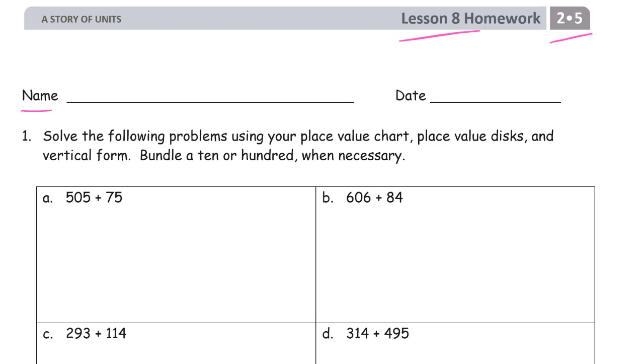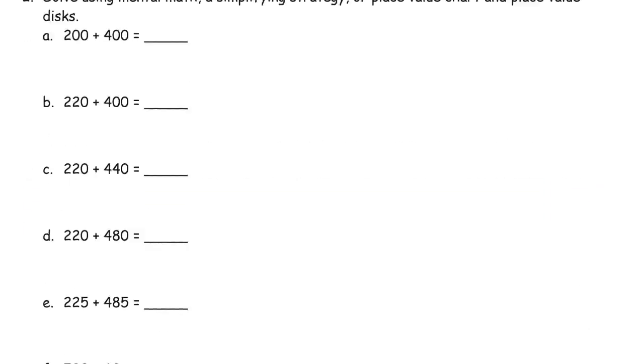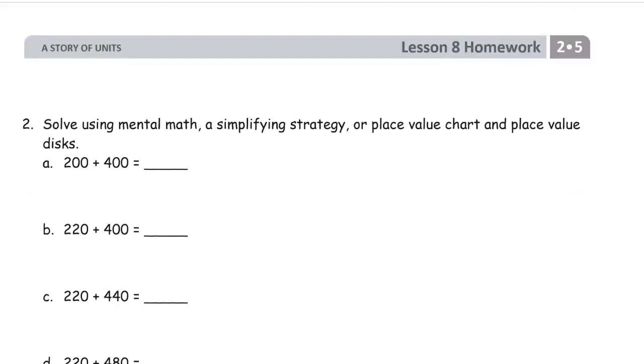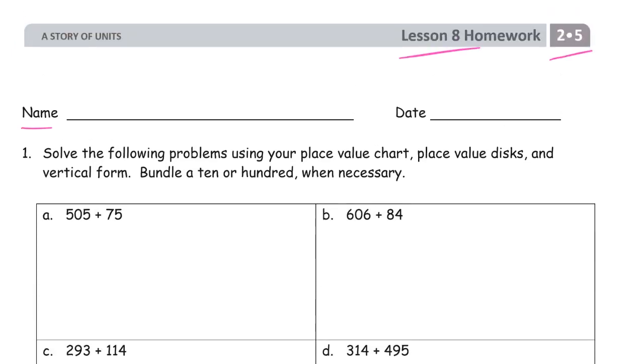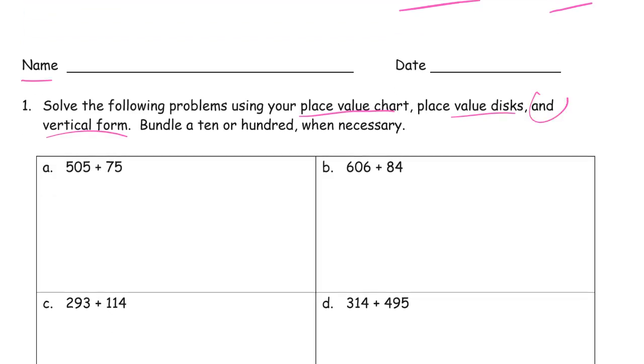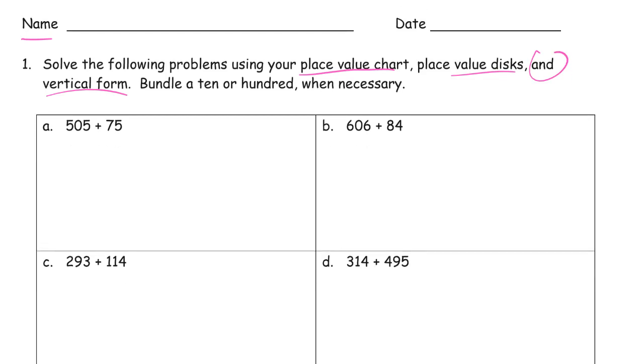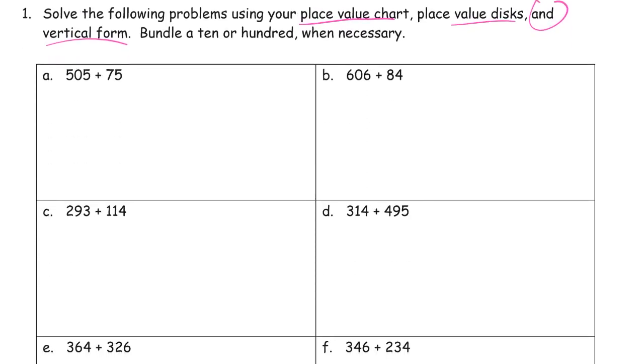Write your name first. We're going to be doing a lot of addition on this page and on the next page. It says we can use place value chart and disks, so that means drawing a chip model and vertical form. We're going to be doing it two different ways. It says and, not or. And bundle a 10 or 100 when necessary, it's a little reminder for us.